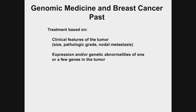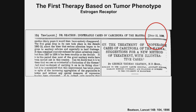In the past, treatment was based on clinical features of breast cancer — features such as size, pathologic grade, and spread to the regional lymph nodes — but also expression or genetic abnormalities, so genomic features of only a few genes. This is not a new story; it really begins with this publication, which I would say is the first therapy based on tumor phenotype. It involves the estrogen receptor, still used today in the management of breast cancer. This paper by George Beetson was published in The Lancet in 1896 about a novel treatment for patients with inoperable breast cancer.